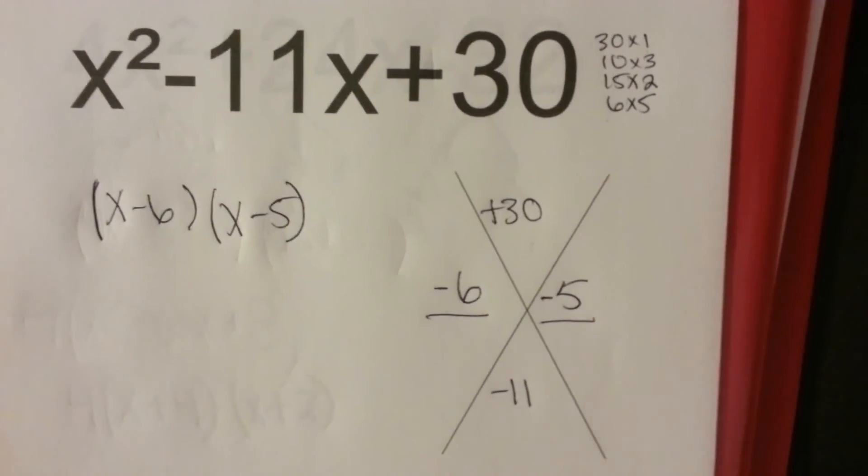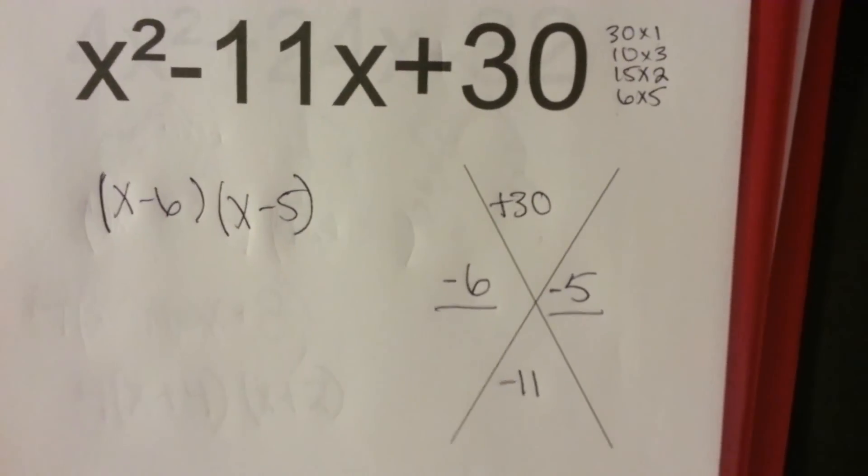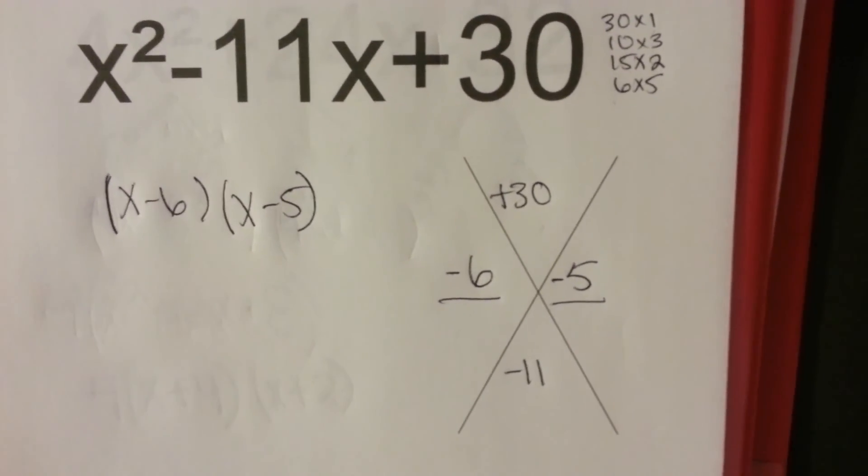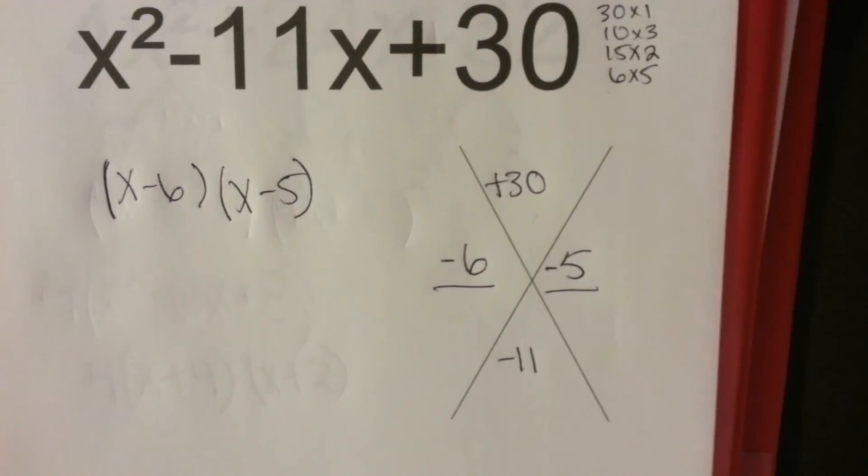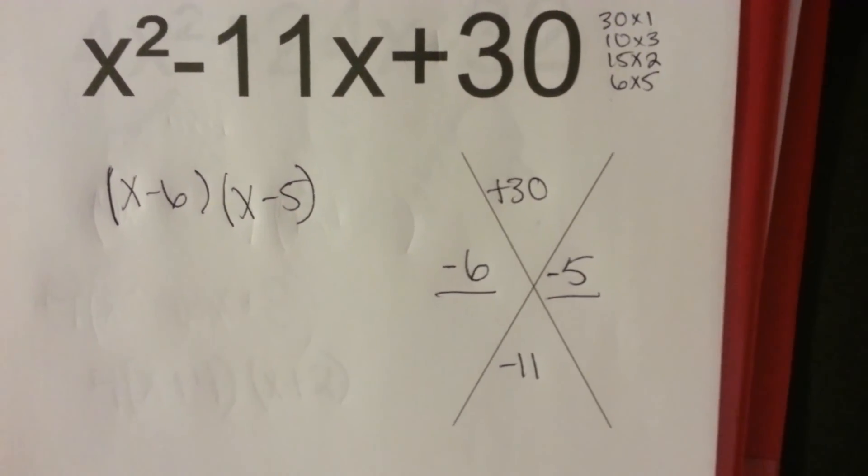And if you do the FOIL method, you'll get your original equation, which is x squared minus 11x plus 30. And that's it.